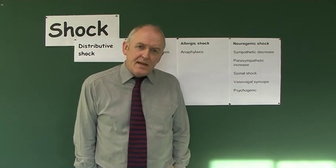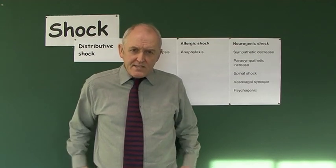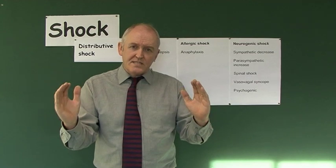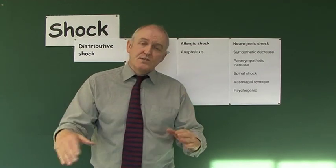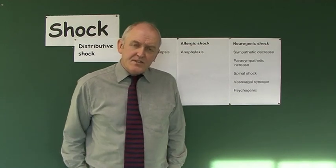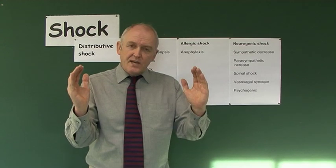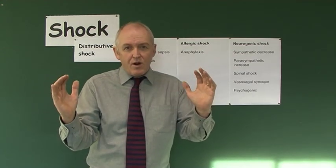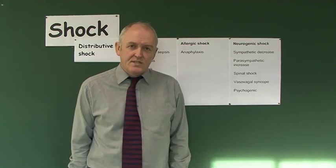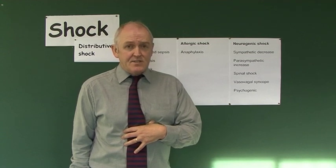Histamine has two main effects. First, histamine is vasodilatory — it will dilate the blood vessels, reducing peripheral resistance and reducing blood pressure. Second, there's often an effect on the lungs because as well as being vasodilatory, histamine is also a bronchoconstrictor. It constricts the bronchial passages, giving rise to essentially an acute asthmatic condition.